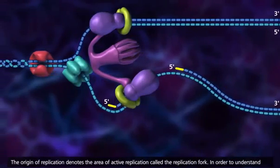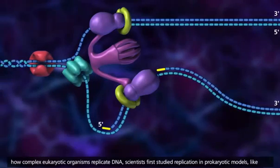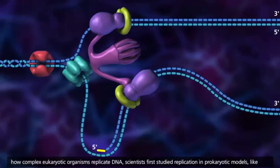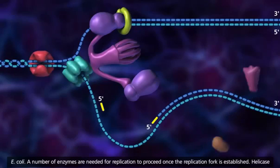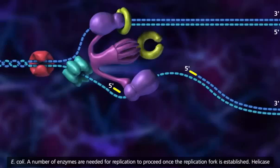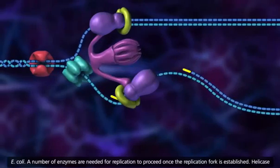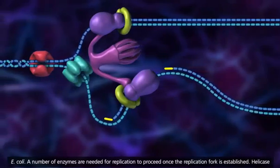In order to understand how complex eukaryotic organisms replicate DNA, scientists first studied replication in prokaryotic models like E. coli. A number of enzymes are needed for replication to proceed once the replication fork is established.